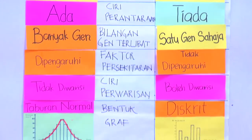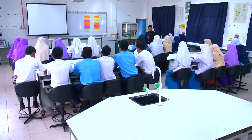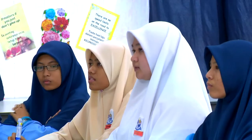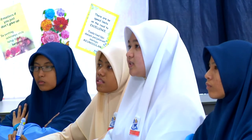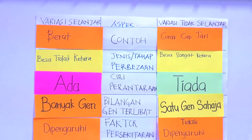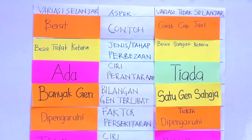Tepuk tangan, dah siap. Kita jemput Idayu untuk menerangkan perbezaan yang telah setiap kumpulan tampalkan di sini. Terdiri daripada variasi selanjar dan variasi tidak selanjar. Contoh bagi variasi selanjar ialah berat, manakala contoh bagi variasi tidak selanjar ialah corak cap jari. Bagi variasi selanjar, jenis perbezaannya ialah tidak ketara, manakala tidak selanjar, bezanya sangat ketara.